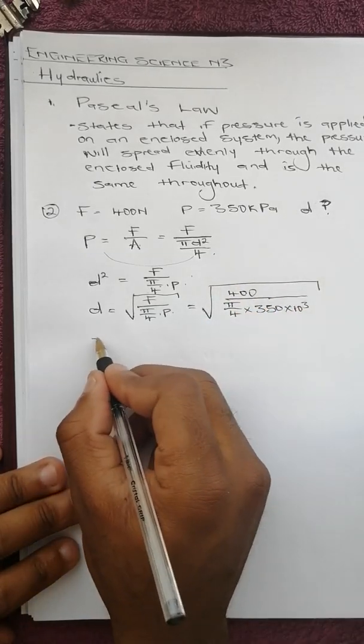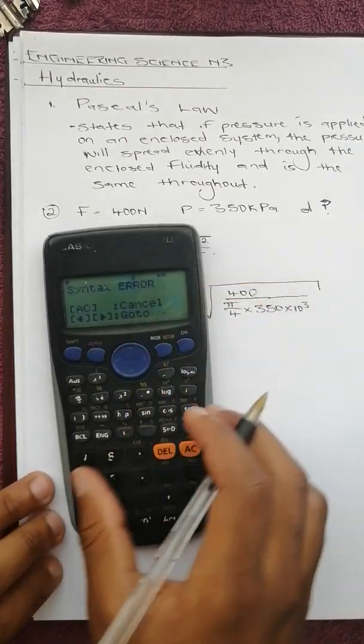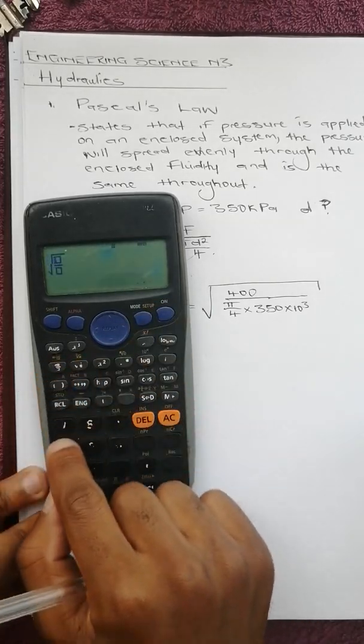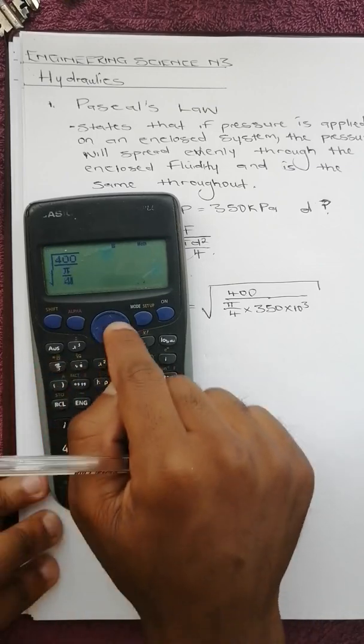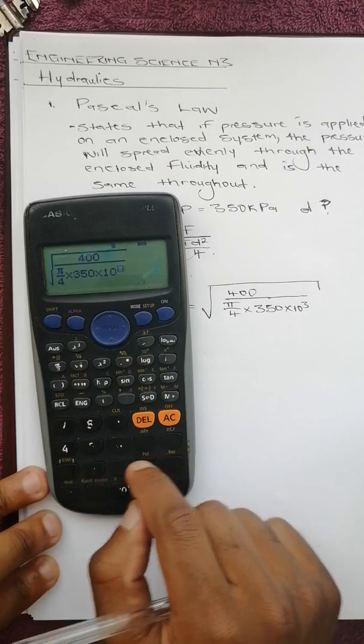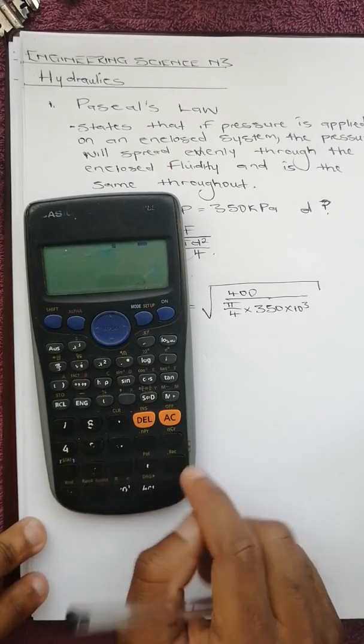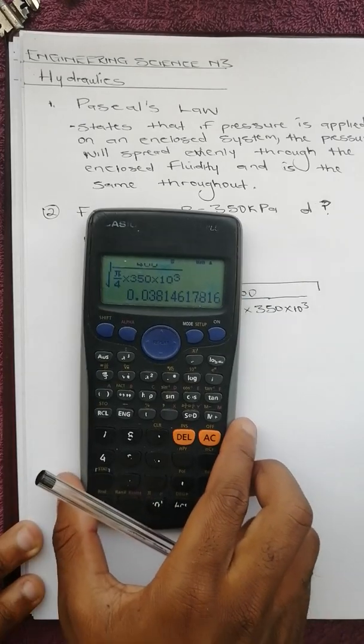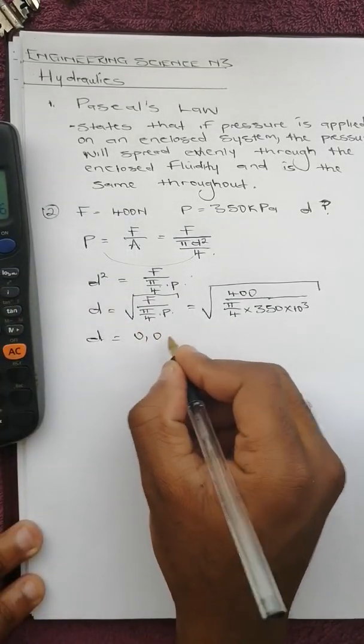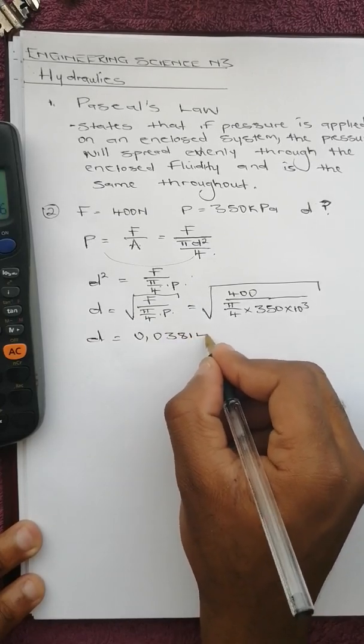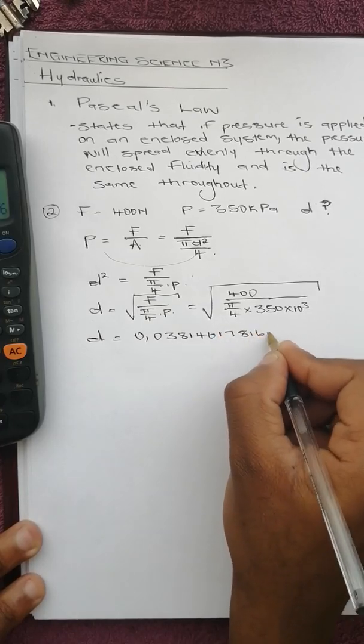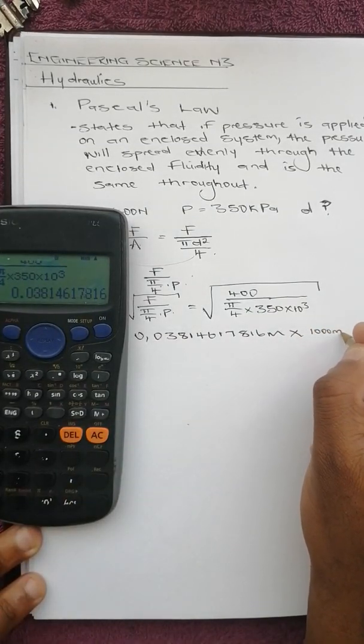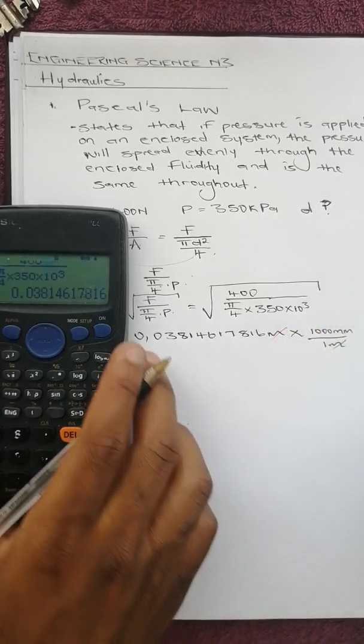We punch that into the calculator: square root of 400 over pi over 4 times 350 times 10 to the power 3. We get 0.0381461781 meters. We are told to calculate in millimeters, so we multiply by 1000.